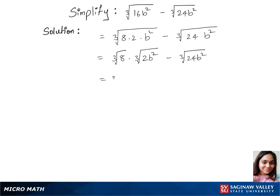Now cubic root of 8, 8 can be written as 2 to the power 3, times cubic root of 2b squared will remain the same minus cubic root of 24 can be written as 12 times 2b squared.